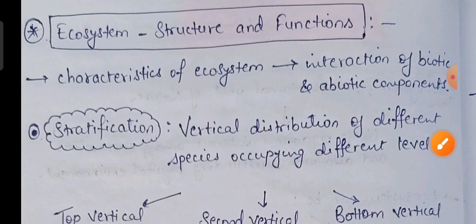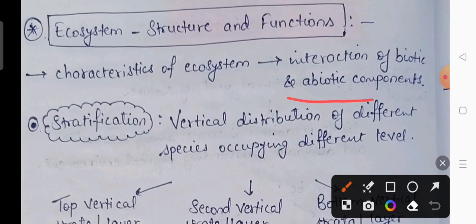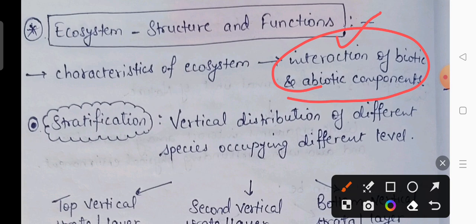The next topic is ecosystem structure and functions. Kisi bhi ecosystem ki main characteristic feature hai interaction between biotic and abiotic components. All the living organisms are included in the biotic components, whereas all the physical factors — for example air, temperature, soil, etc. — are all included in the abiotic components.